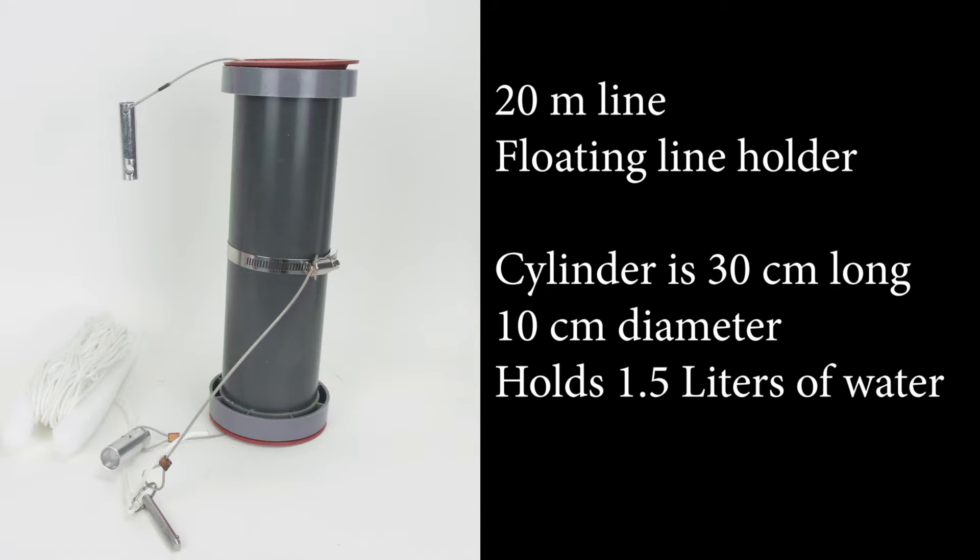If you want to investigate environmental factors on water, a water sampler is a handy way to do this. It comes with a 20 meter long line, a floating line holder, and the cylinder can hold up to one and a half liters of water.